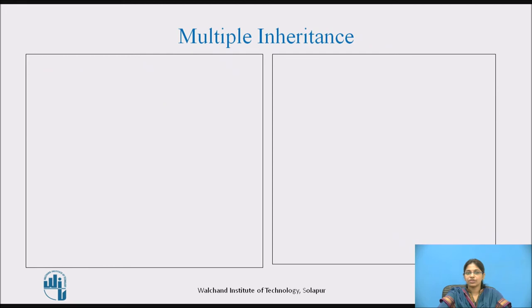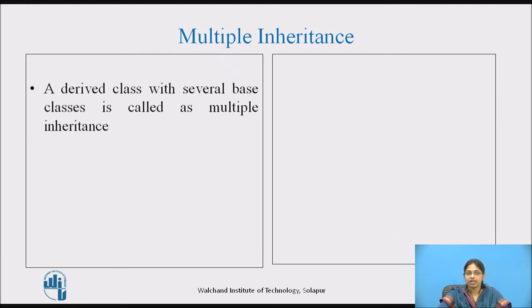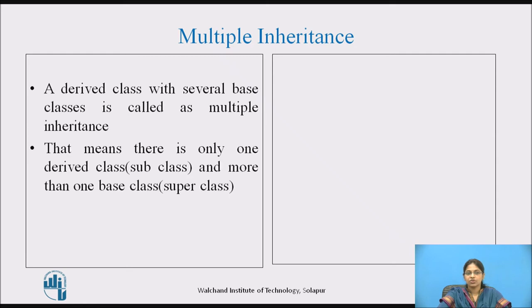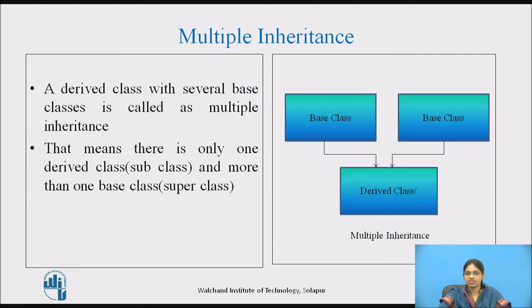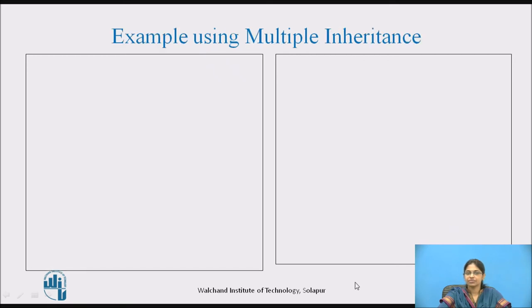In this video we focus on multiple inheritance. In multiple inheritance, a derived class with several base classes — there is only one derived class (the subclass) and more than one base class (superclasses). The structure shows more than one base class from which a single new derived class is derived. Let us see an example using multiple inheritance.